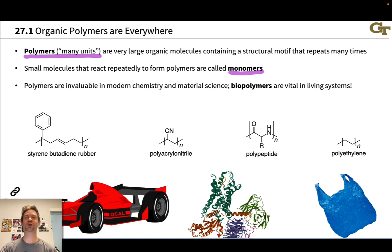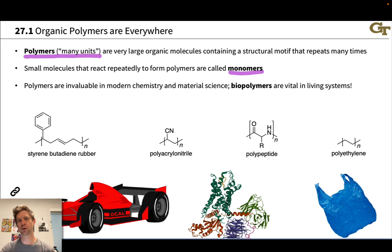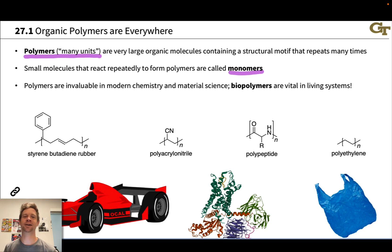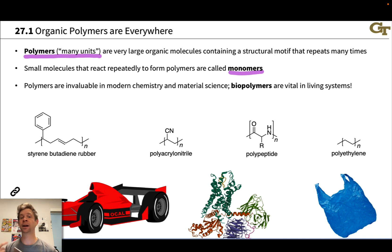Biopolymers are also extremely important — polymers are critical to the chemistry of life. Proteins and polysaccharides are all polymers of biomolecules. As we move into biochemistry, we will see polymers of biochemical monomers come up again and again. The biochemical monomers contain a nucleophilic group and an electrophilic group built into their structure. For example, amino acids include an electrophilic carbonyl group and a nucleophilic amino group in the same molecule, which is ultimately what enables polymerization chemically.